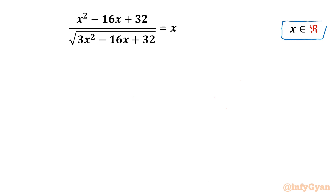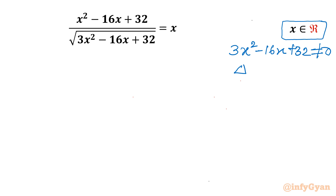Let's get started by cross multiplying the terms. But before that we should note the denominator cannot be equal to 0. If we check its discriminant, it is 16² minus 12 times 32, which would be negative — generating only complex solutions. So it is non-real, and we can cross multiply.